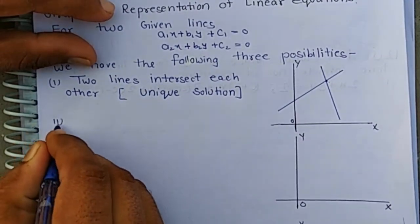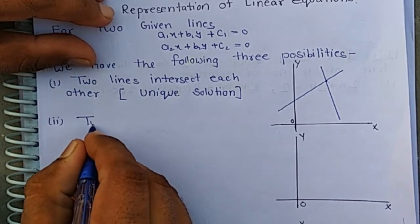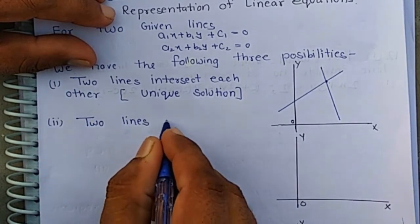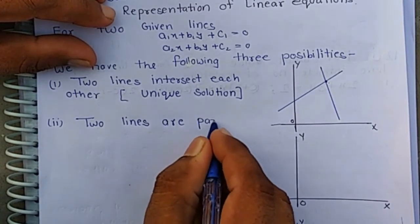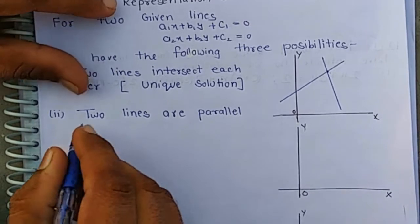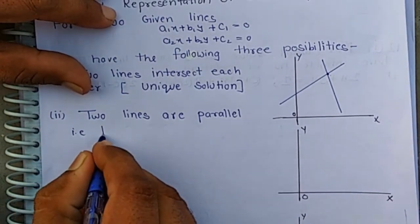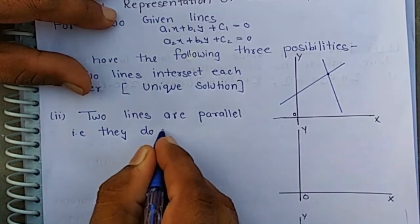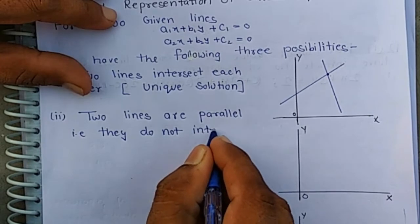Second possibility: the two lines are parallel. When two lines are parallel, that is, they do not intersect each other.